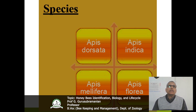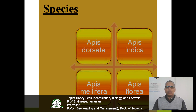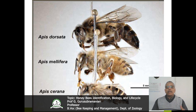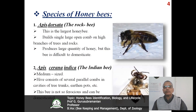Whenever you come to the honeybee species available in India, there are four species that are commonly available: one is Apis dorsata, Apis indica, Apis mellifera, and Apis florea. This particular diagram is showing Apis dorsata — this is the larger one. And next one is Apis mellifera. Third category is Apis serena indica.